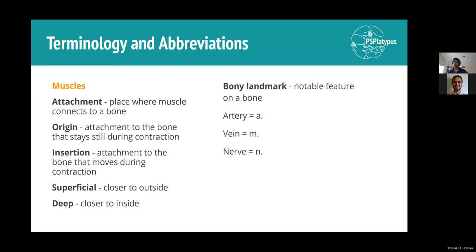Bony landmarks are just notable features on bones — raised bits, little grooves, all sorts of things. I'll occasionally use abbreviations: A, V, and N for arteries, veins, and nerves respectively. I'll also use M for muscle at some point.